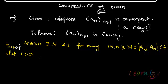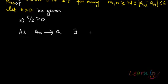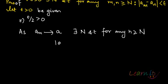Let epsilon greater than 0 be given to us. In that case, I know that the sequence is convergent. Now, epsilon greater than 0 means epsilon by 2 will also be greater than 0. I know that a_n tends toward a. So by definition of convergence, there exists some capital N such that for any n greater than or equal to this N, |a_n minus a| is less than epsilon by 2.